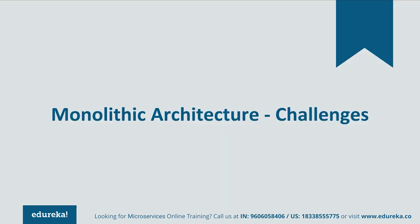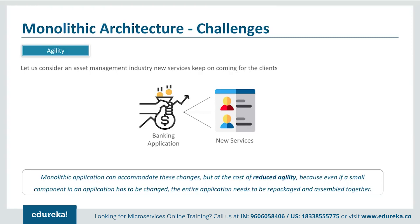Let's understand these challenges one by one. The first challenge is Agility. Consider an asset management industry where different clients come with different investments and have to be offered different services. If any new services had to be given to new clients, or any new changes had to be made, monolithic applications could accommodate those changes — but at the cost of reduced agility. This happened because even if a small component had to be changed, the entire application had to be repackaged together.